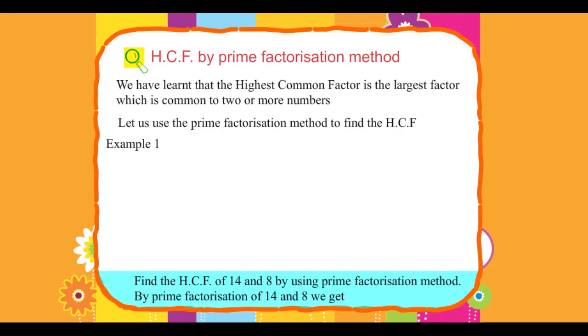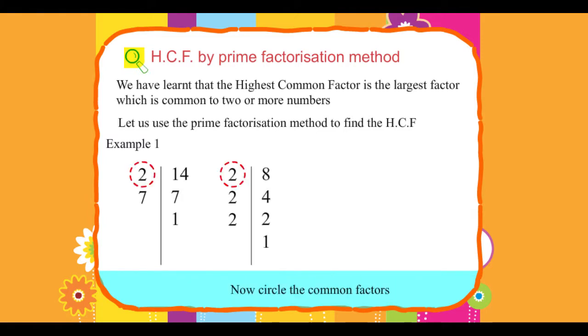By prime factorization of 14 and 8, we get: 14 = 2 × 7, and 8 = 2 × 2 × 2. Now circle the common factors. The common factor of 8 and 14 is 2.